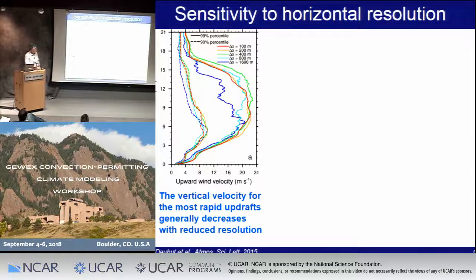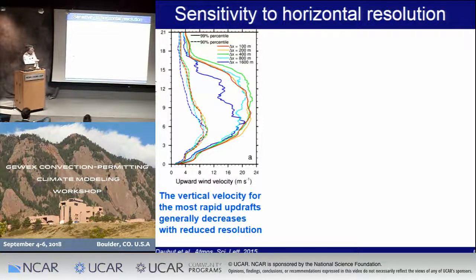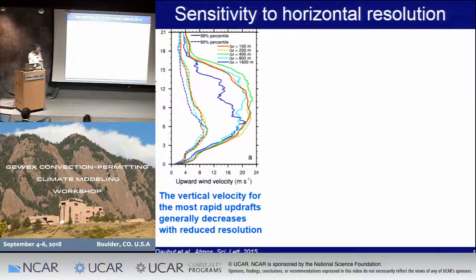What we get is almost a convergence with the highest resolution — in red, with 100 meters, and in orange, 200 meters — for the distribution of upwind vertical velocity at the 99th percentile, with vertical velocity up to 25 meters per second. In simulations in the gray zone of turbulence, at 400 meters (green), we have an overestimation of vertical velocity, and an underestimation at 800-meter resolution.